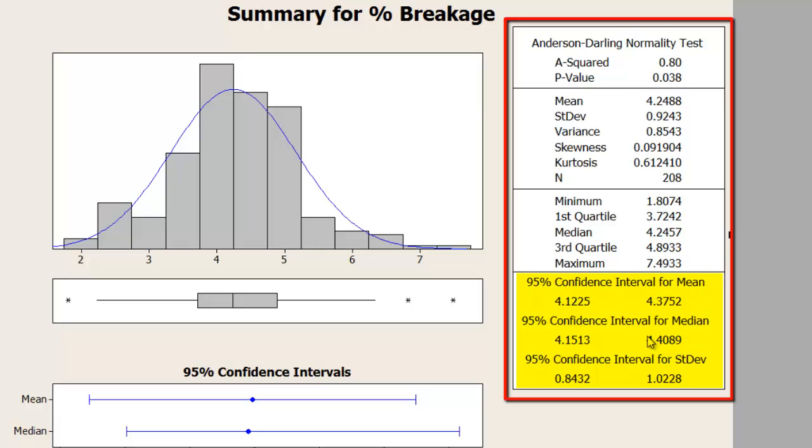In this case, because my data is not normally distributed, hence median will be my measure of central tendency. And I can see that the as-is confidence interval of my median is from 4.15 to 4.4. So a goal statement, anything less than 4.15 is acceptable statistically.